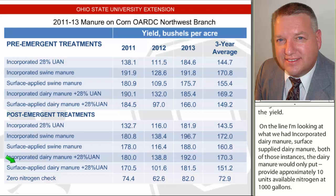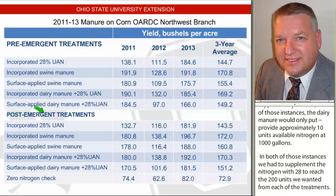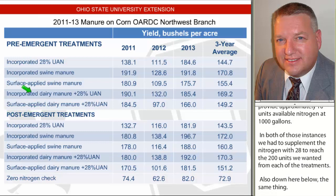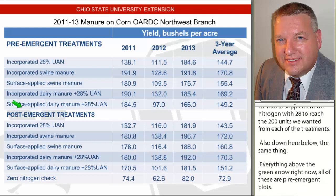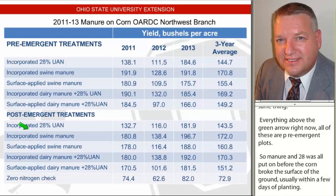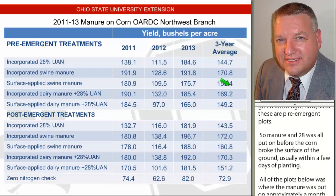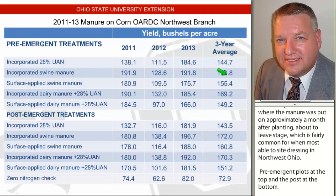Everything above the green arrow is all pre-emergent plots — the manure and the 28% UAN was all put on before the corn broke the surface of the ground, usually within just a few days of planting. All the plots below were where the manure was put on approximately a month after planting. The corn was in about the two-leaf stage, which is fairly common for when most people do side dressing in northwest Ohio. Over to the far right is a three-year average comparing 28% UAN versus incorporated swine manure versus surface-applied swine manure versus incorporated dairy manure versus surface-applied dairy manure, with the same comparisons on the post-emergent plots below.